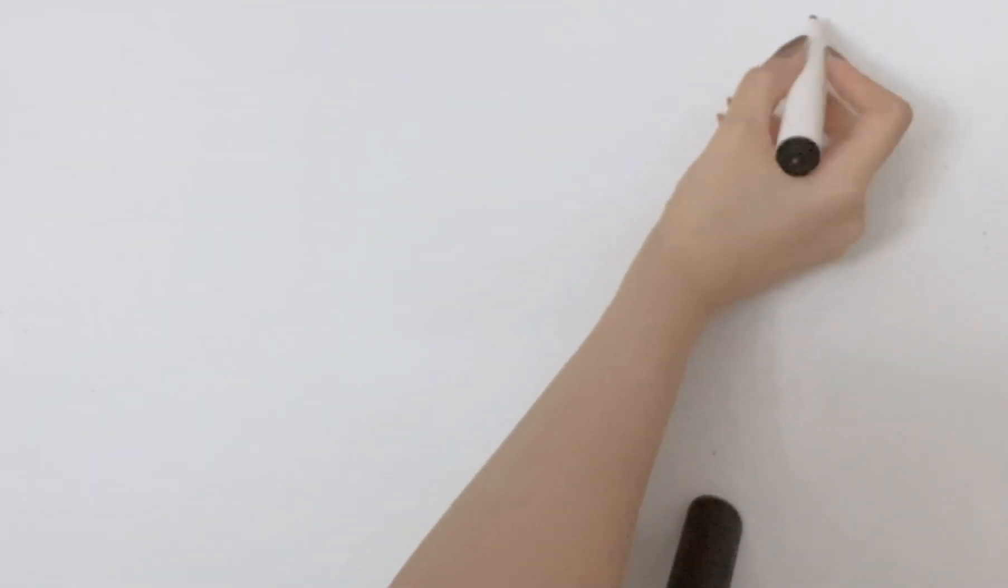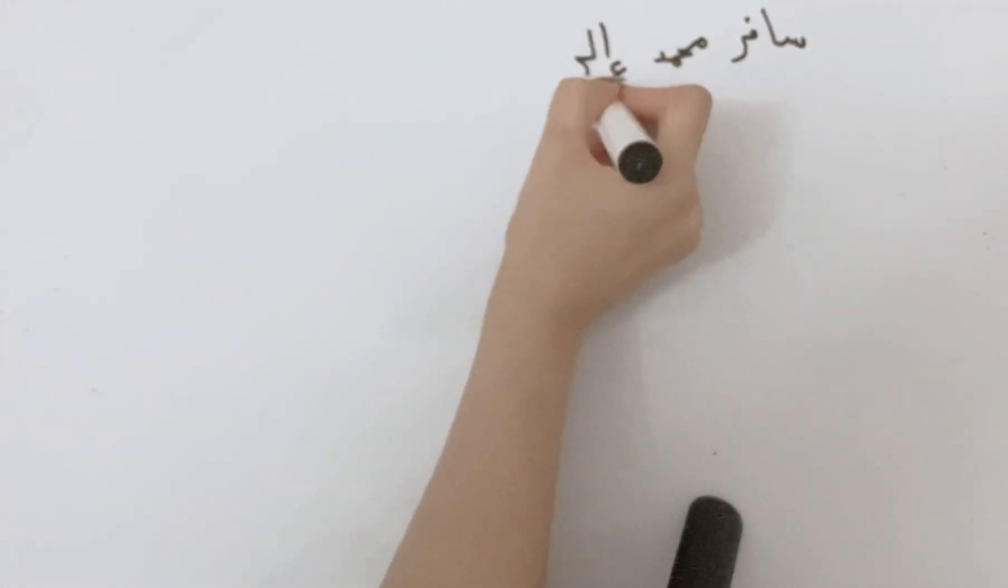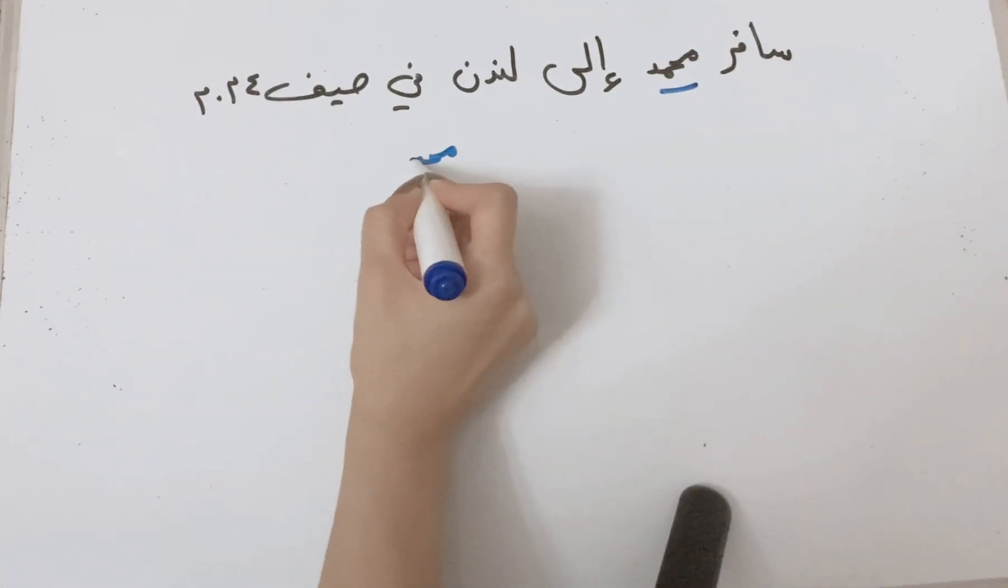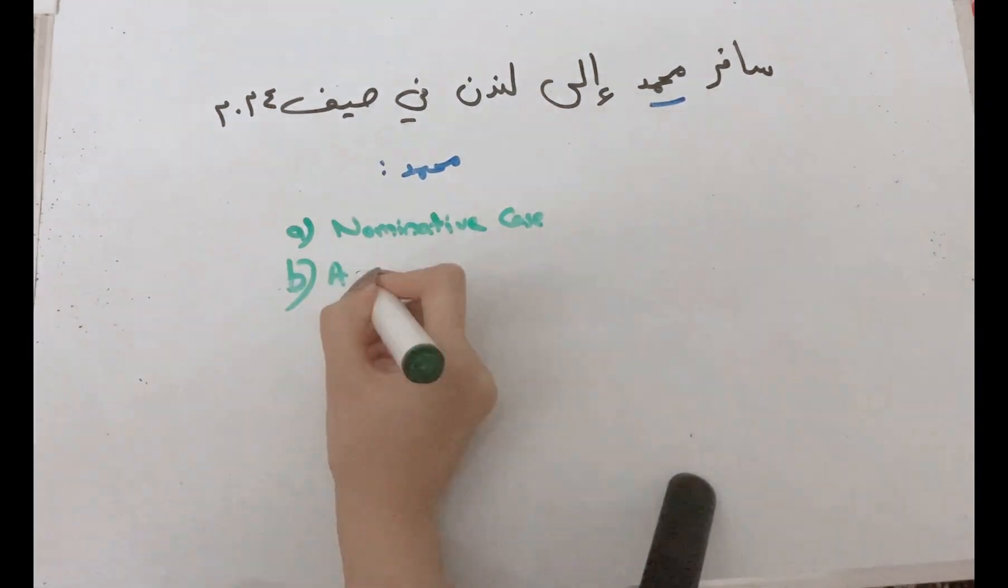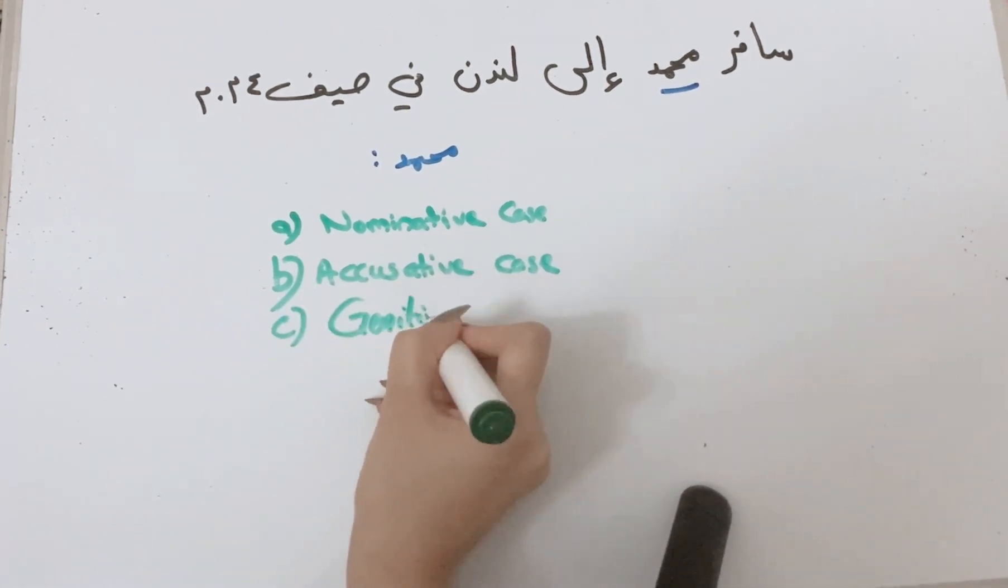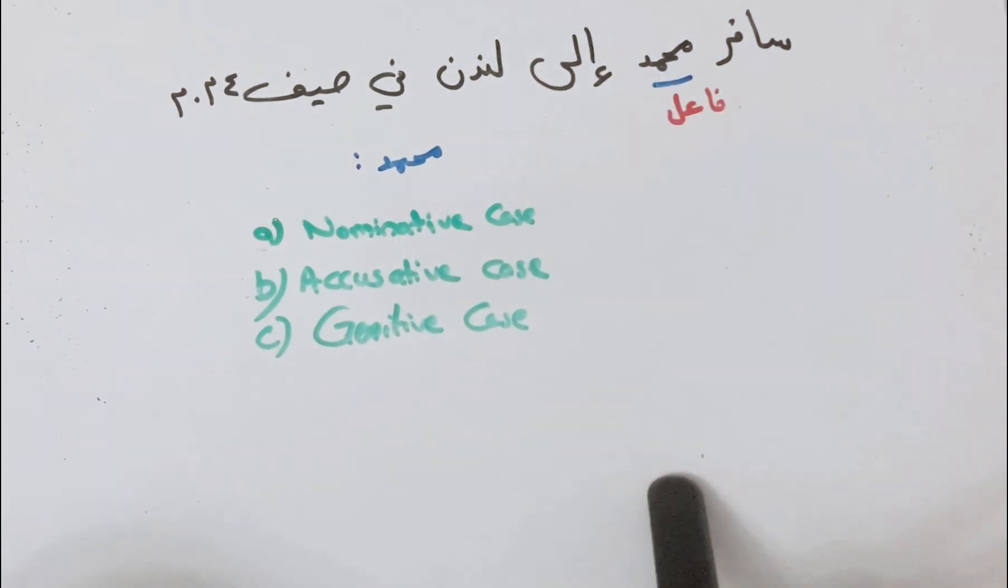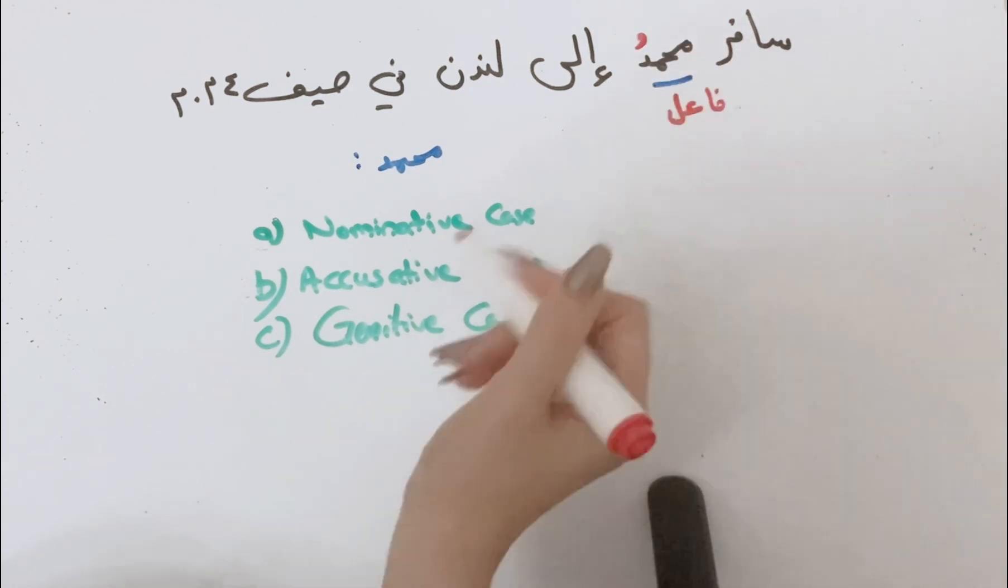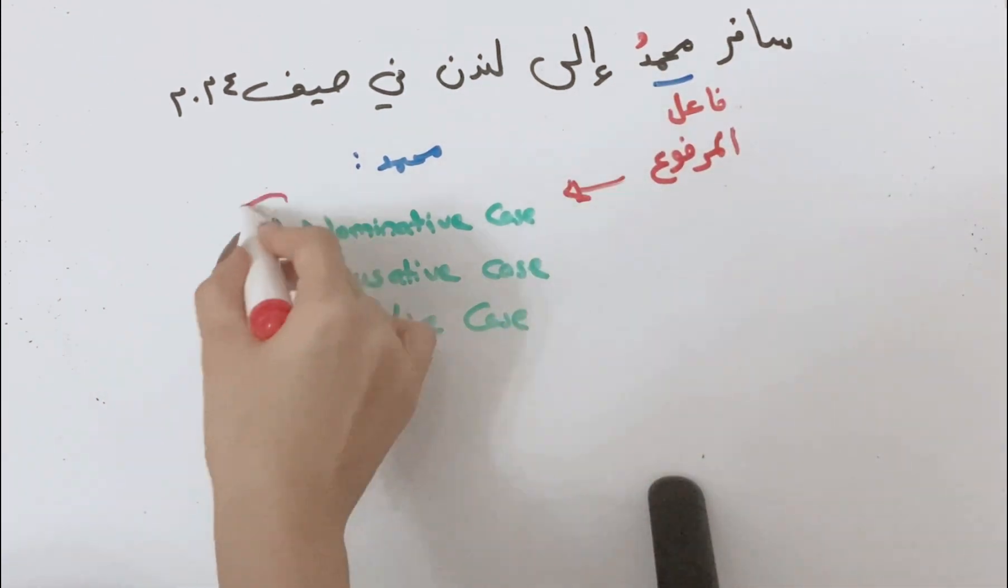Now I want you to solve some examples on your own. I will help you. Safar Mohammed ila London fi saif arba wa'ashrun. So Mohammed, is it a nominative case, accusative case, genitive case? Mohammed is the subject of a verb which means it is the nominative case, al-marfoo. Good job if you got that right.